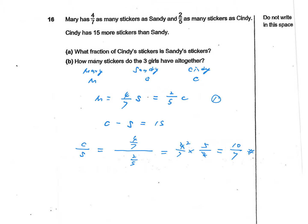Next, how many stickers do the three girls have altogether? Because we know that C equals 10/7 multiplied by S, if we substitute this back into our second condition, we have 10/7 S minus S equals 15. That gives us 3/7 S equals 15. From this, we can derive that S equals 15 multiplied by 7/3, which is 35.